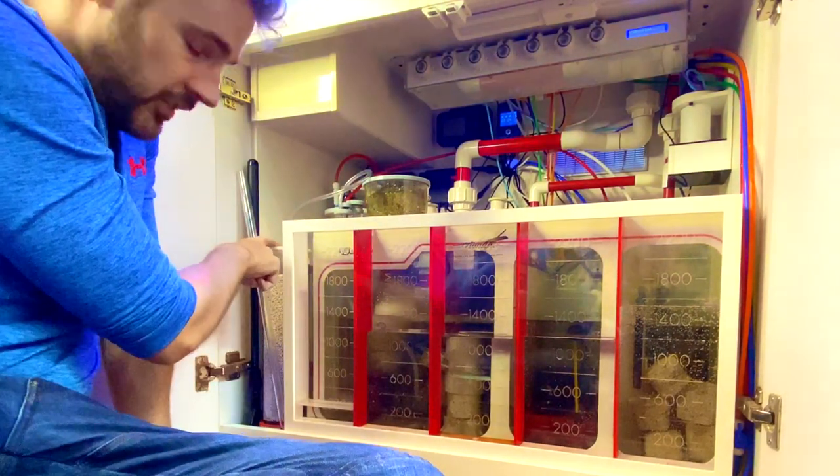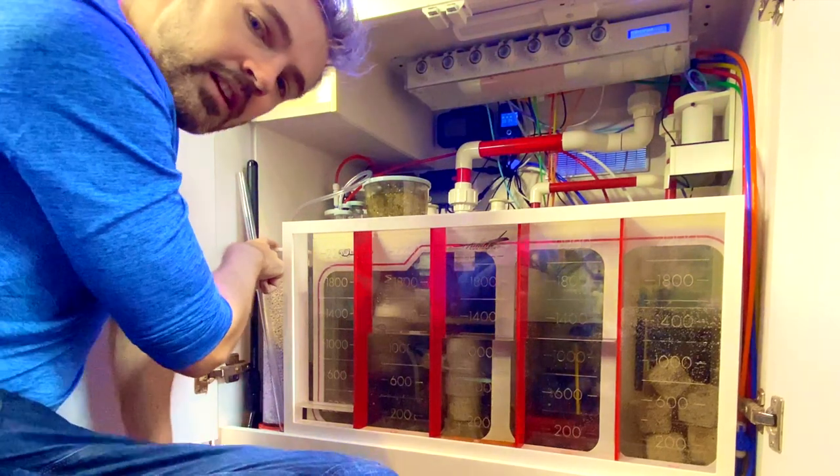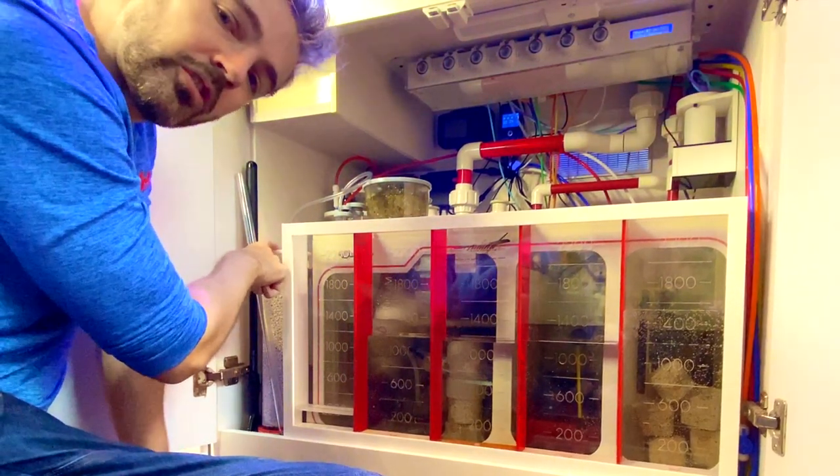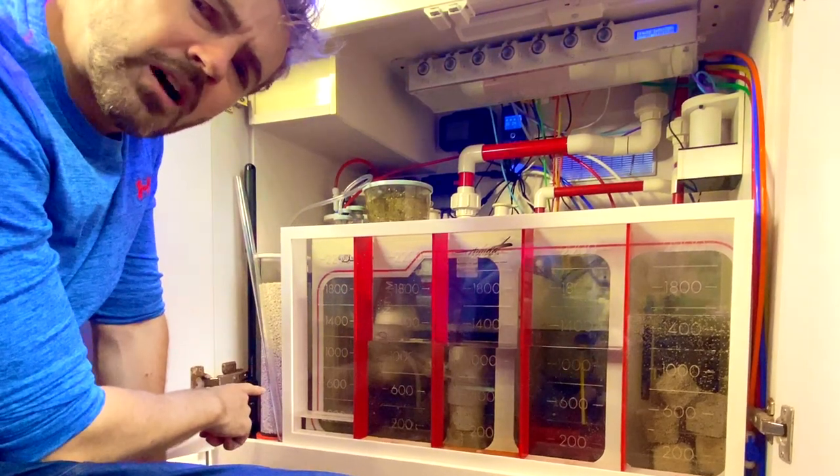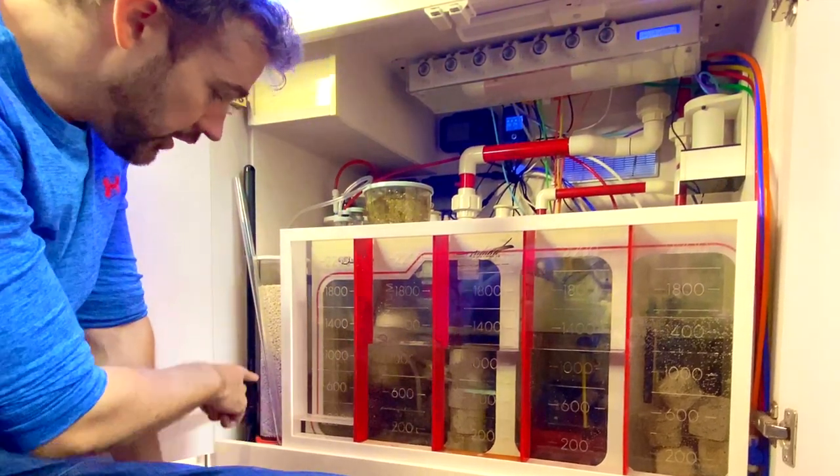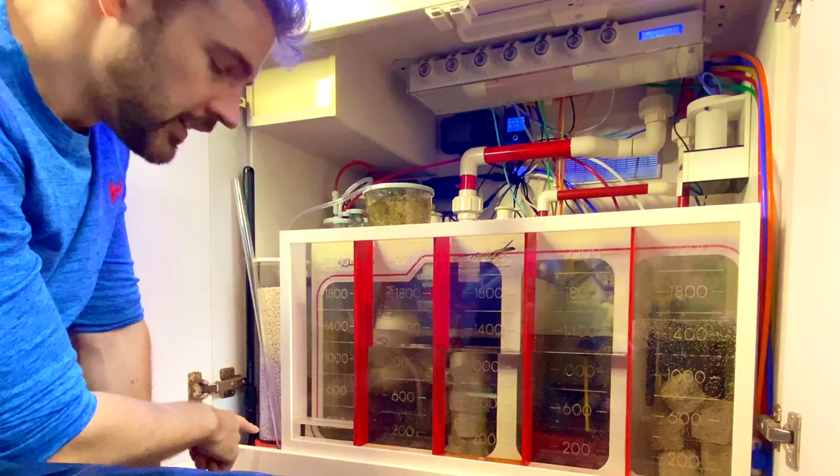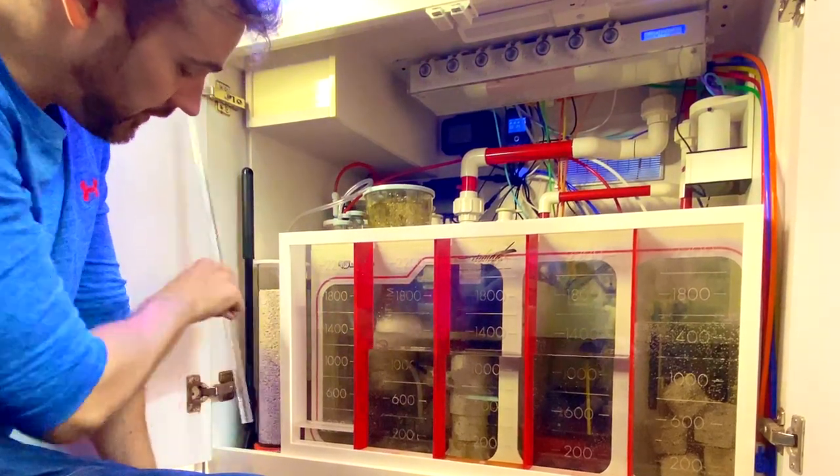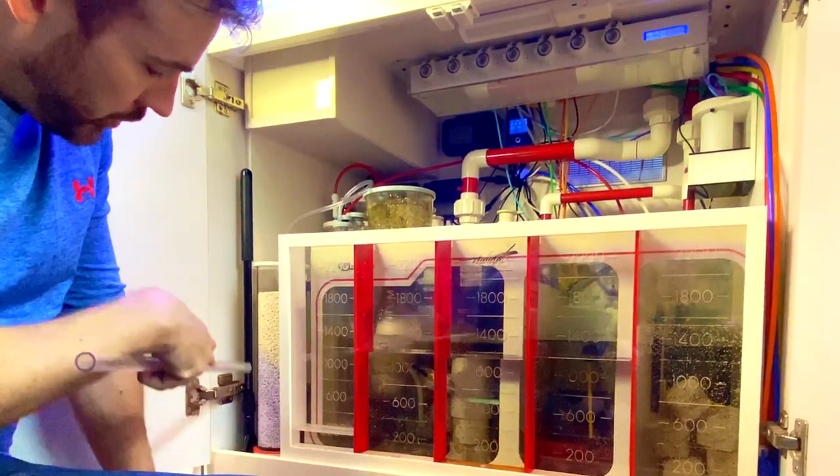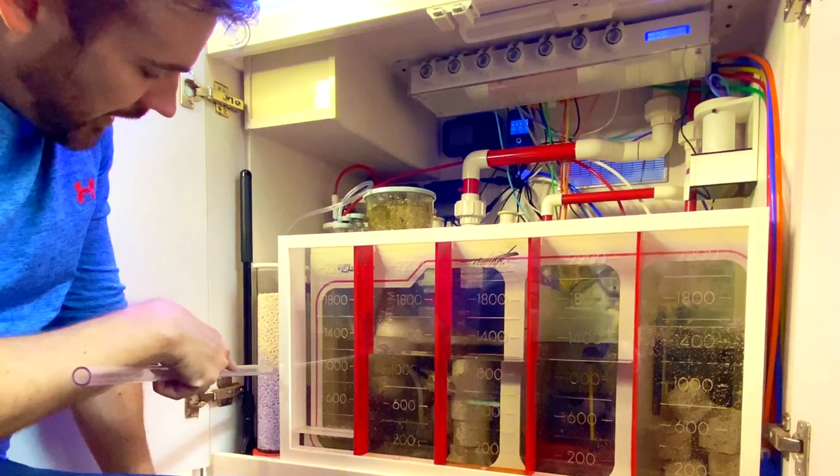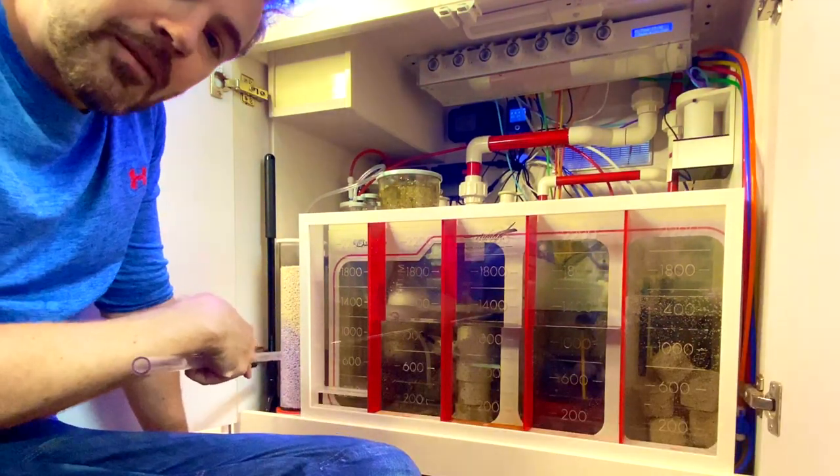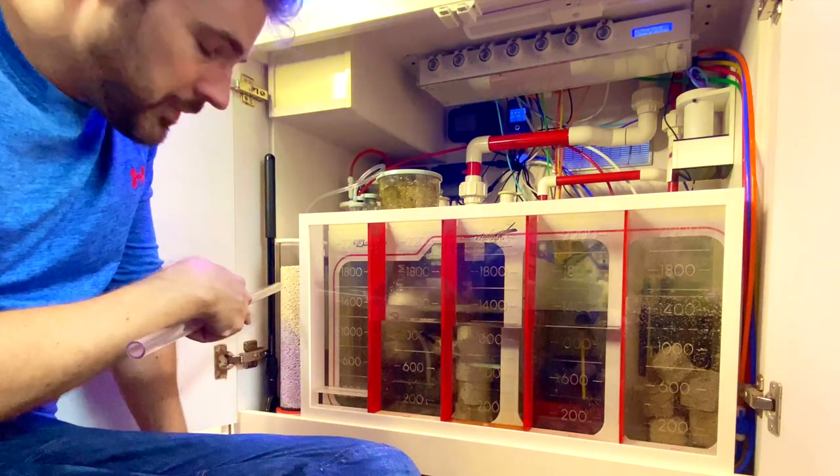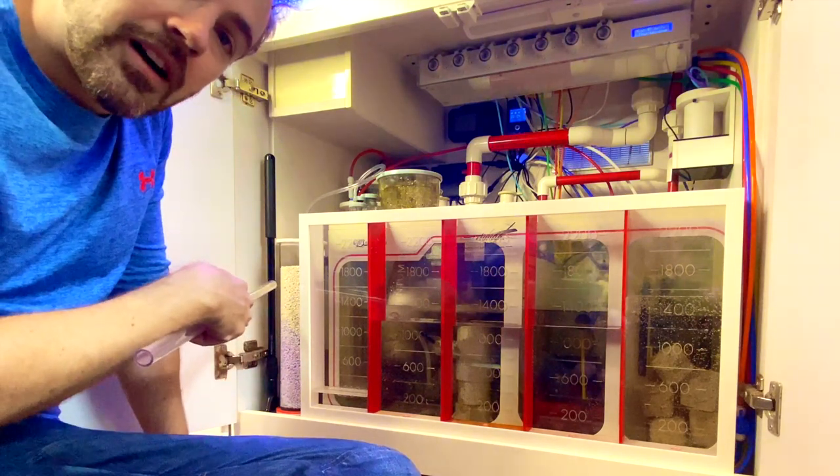This unit here is my Pacific Sun CO2 scrubber, the medium-sized one. And I've had this now for about three to four months, and so far I've only had to change the media once. And as you can probably see from the color, it goes from blue to white. It's about halfway depleted right now. So where the media is blue, that means it's being expended, and where the media is white, that means it's still active.